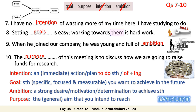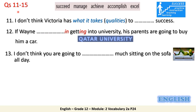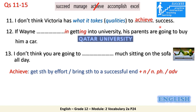For questions from 11 to 15, you also need to use the dictionary to study the difference between the five verbs: succeed, manage, achieve, accomplish, and excel. Once you have finished, please continue to take the feedback. Number eleven: I don't think Victoria has what it takes — 'what it takes' means the qualities. The answer is to achieve success. Achieve means to get something by effort, by hard work, or to bring something to a successful end.